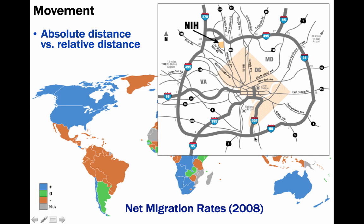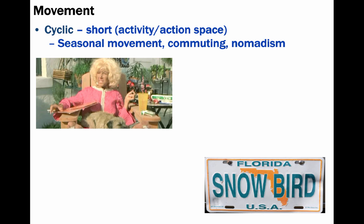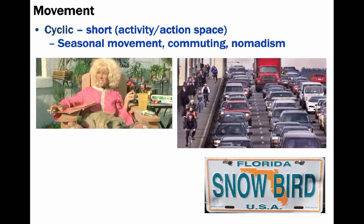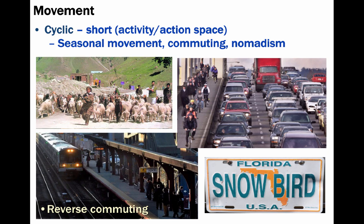There are three major types of movement. The first is cyclic movement, or basically short movements, which make up your activity space, or what's also called your action space. This kind of movement deals with repeated actions, such as seasonal movement down to Florida — the snowbirds from up north — or commuting, which is usually from the suburbs to the city. As we've seen an increase in tertiary, quaternary jobs, there's also reverse commuting, where people go from the cities into the suburbs and back again. Nomadism is also an example of cyclic movement, where people travel from place to place but come back to where they had begun.